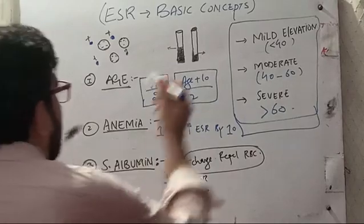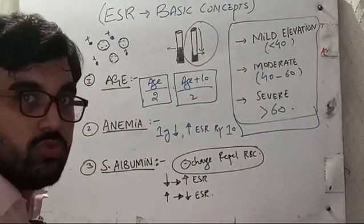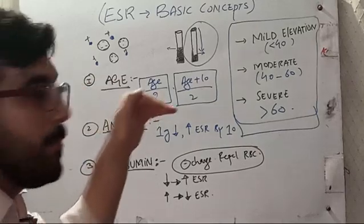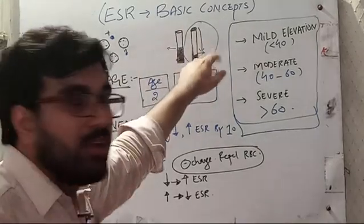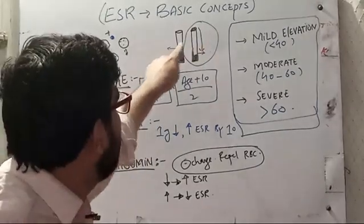This one has high ESR because the RBC has traveled more distance in the same time. We take measurements from top to bottom.